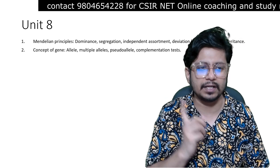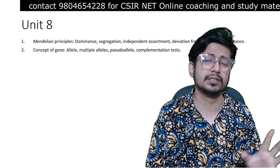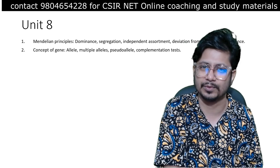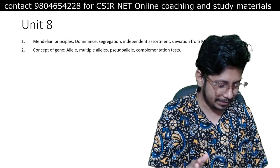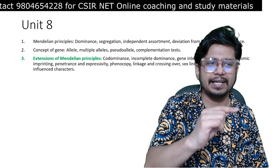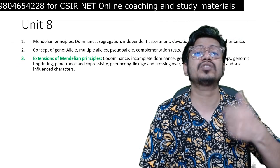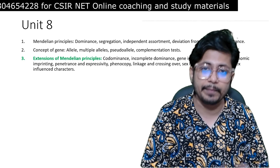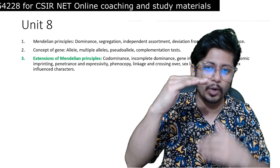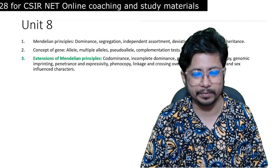The next one is concept of gene — allele, multiple alleles, pseudo alleles, all these concepts. You need to know this even at the plus-two level, but they won't ask any question from it. Now, green color-coded extensions of Mendelian Principle is the most important type. Yellow is moderately important. Red is the least important type.